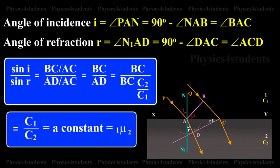Angle of incidence i is equal to angle PAN is equal to 90 degrees minus angle NAB is equal to angle BAC. Angle of refraction r is equal to angle N1AD is equal to 90 degrees minus angle DAC equals angle ACD.